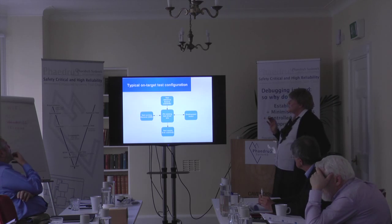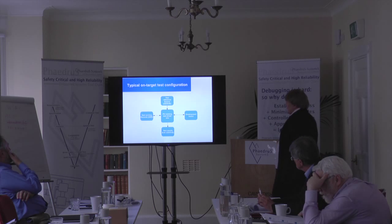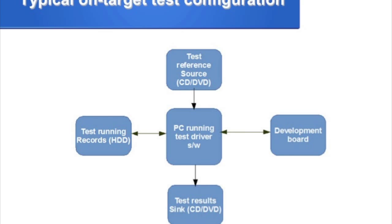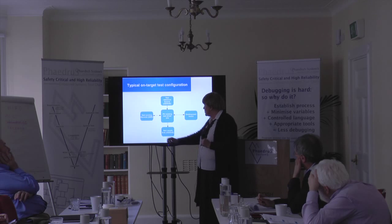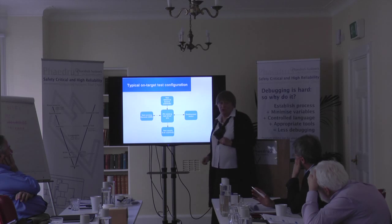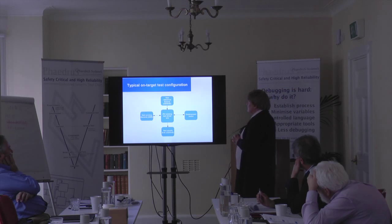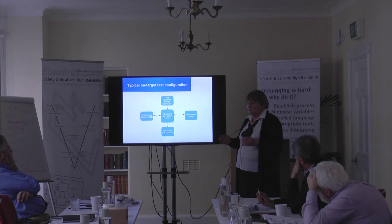A typical on-target test configuration looks something like this: a test reference source, ideally on a CD or DVD — you don't want it being rewritten, you want to lock it away after you finish using it. A test result sink, a rewritable CD or DVD. A PC running the test driver software, and on its hard disk something that records the current state of the validation and the development board. This is some kind of USB link or J-link or whatever. Very straightforward to do — you can do this with a laptop and a dev board very easily.